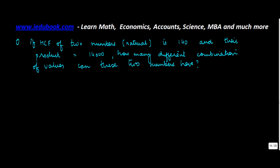Now basically we know that the product of the HCF and the LCM of two numbers is equal to the product of numbers themselves. So we are told that the HCF is 140 and the product is 14,000. Now if that be the case, if the HCF of the numbers is 140 and the product is 14,000...